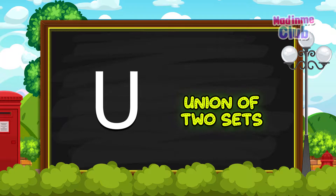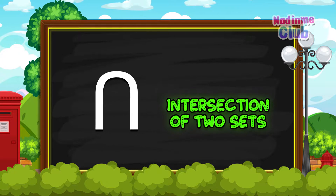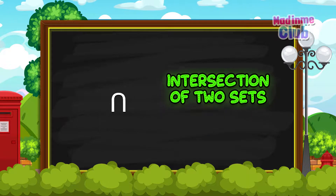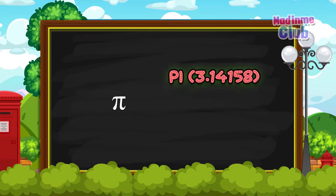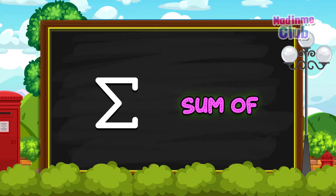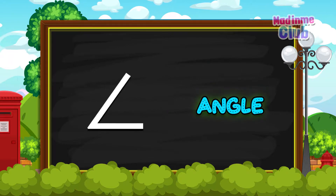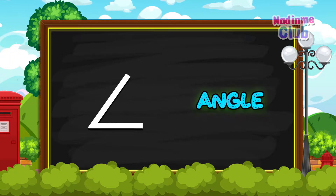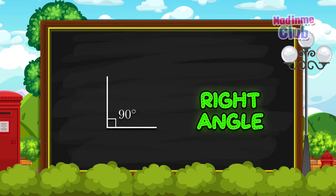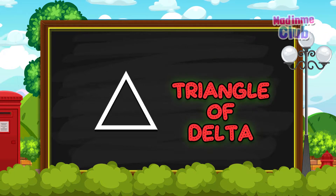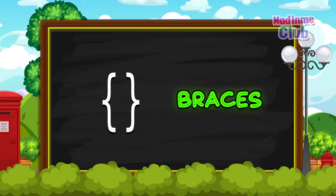Union of two sets. Intersection of two sets — E-I-I-I-O. Oh, McDonald's had a farm. Pi — E-I-E-I-O. Sum of. Angle. Right angle. And on his farm he had a farm. Triangle of Delta. Braces.